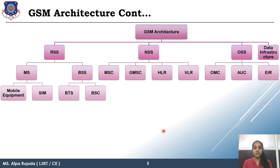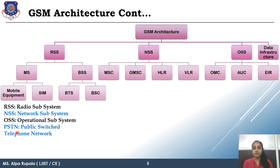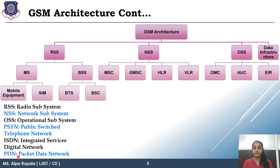I will only say HLR is doing this, MSC is doing this — all fundamentals will be referenced by acronyms only. RSS full form is Radio Subsystem. NSS full form is Network Subsystem. OSS is Operational Subsystem. PSTN, part of data infrastructure, is Public Switched Telephone Network. ISDN is Integrated Service Digital Network. PDN is Packet Data Network.